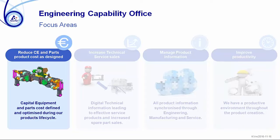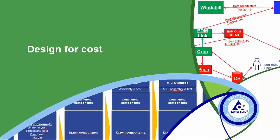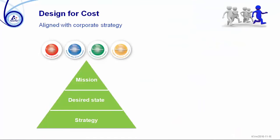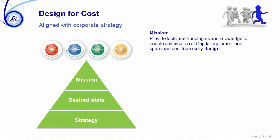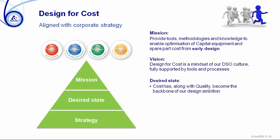Why do we say design for cost and not design to cost? Design to cost, for me, is when you have a specific target cost and you design towards the target. Design for cost is more a question of mindset. Looking at design for cost and what we want to achieve: the mission is to provide tools, methodologies, and knowledge to enable optimization of capital equipment and spare part cost from early design. The vision is that design for cost is the mindset for our DSO — development and service operations — culture, fully supported by tools and processes.